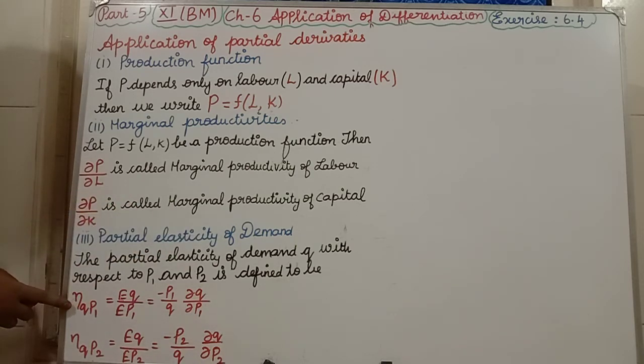What symbol is this? We have learnt in XI standard, 6.1. What symbol is this? Eta. η_QP1 is equal to E_Q divided by E_P1, equal to minus P1 divided by Q times ∂Q/∂P1. For price one.